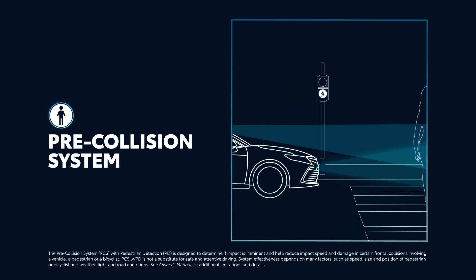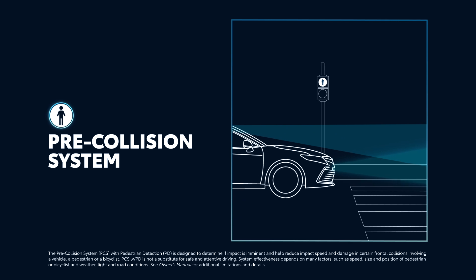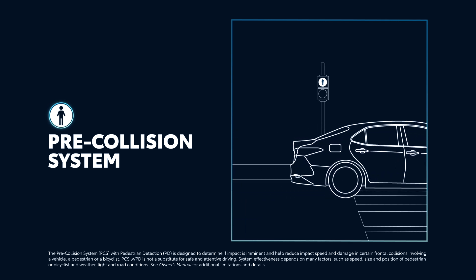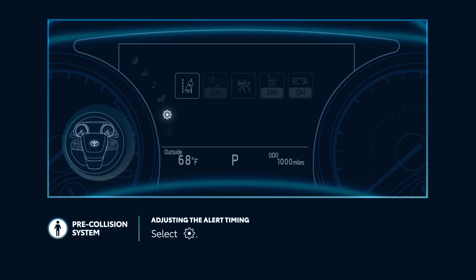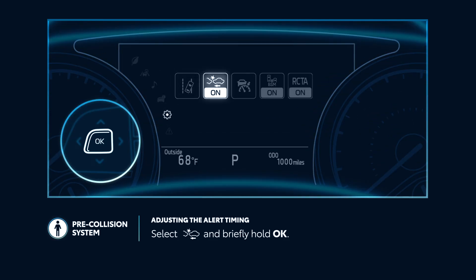Pre-Collision System, or PCS, is designed to help detect a vehicle, a bicyclist, or a pedestrian in certain situations. It can provide an alert as well as automatically brake. This alert timing can be adjusted. To do this, select the Settings menu, then enter the PCS menu by selecting it and briefly holding the OK button.